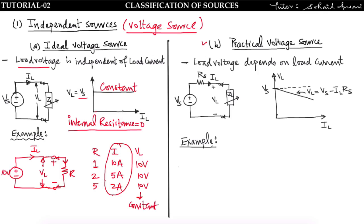No matter what the value of load current is, the load voltage remains constant — that is the property of an ideal voltage source. Now, in a practical voltage source, load voltage depends on load current, and with increase in load current the load voltage is decaying. A practical voltage source has some internal resistance Rs, so a voltage source in series with internal resistance Rs is known as a practical voltage source.